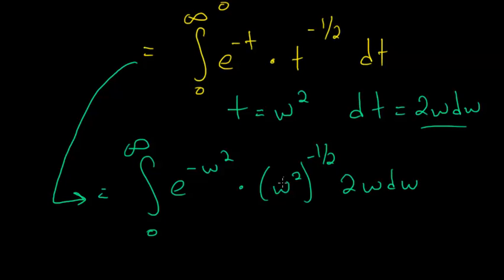So this w squared to the minus one-half will just simplify to w to the minus one, which will cancel out with this w to the first power. So this and this cancel each other out.